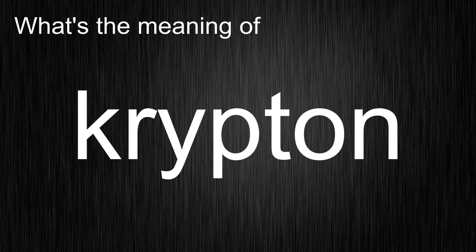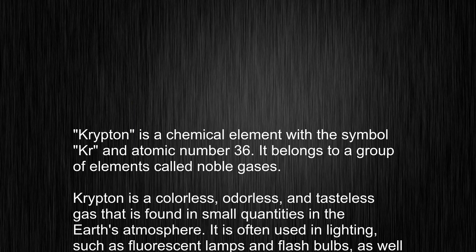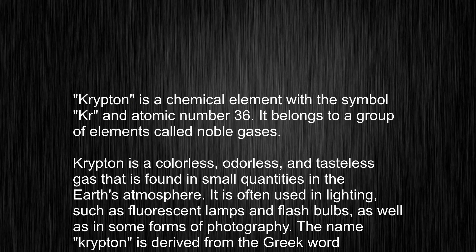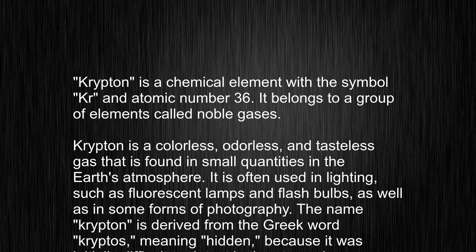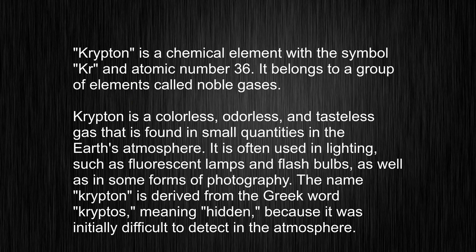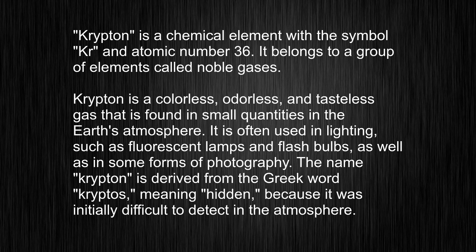Krypton is a chemical element with the symbol Kr and atomic number 36. It belongs to a group of elements called noble gases. Krypton is a colorless, odorless, and tasteless gas that is found in small quantities in the Earth's atmosphere.